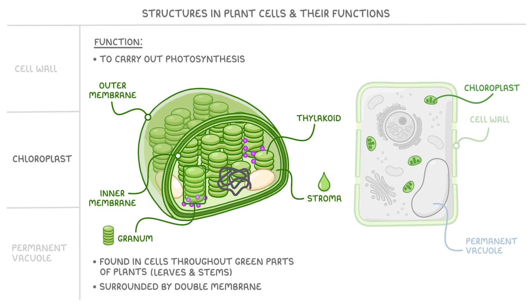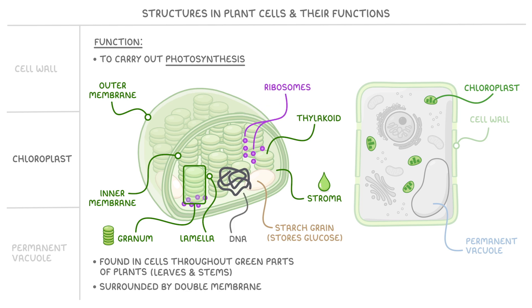In some places the grana are linked together by these little bridge-like extensions called lamellae, or one lamella, and we can also find starch grains in the stroma that store glucose once it's produced from photosynthesis. Now like mitochondria, chloroplasts also have their own DNA and ribosomes, and this means they can produce some proteins that are needed for photosynthesis independently from the rest of the cell.